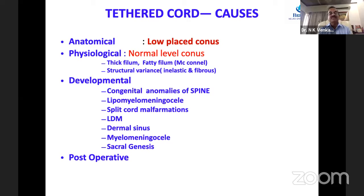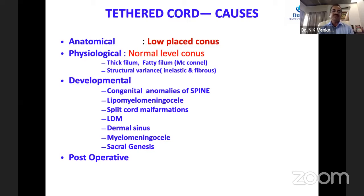Tethered cord can be classified as anatomical (conus placed low), physiological (conus normal but associated with thick or fatty filum or increased fibrous component making the filum inelastic), or developmental (associated with congenital anomalies including lipomyelomeningocele, split cord malformations, LDM, dermal sinus, myelomeningocele, and sacral agenesis). A newer entity is post-operative tethered cord, where scarring after surgery causes re-tethering.